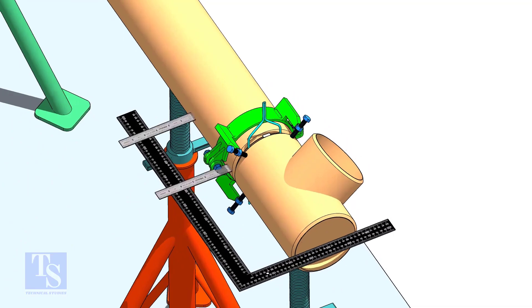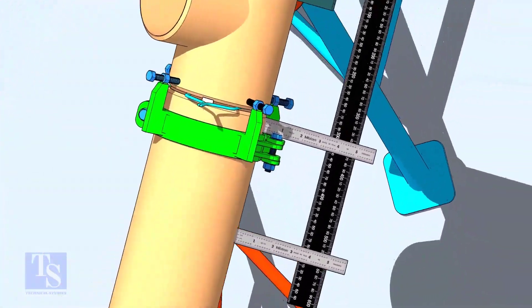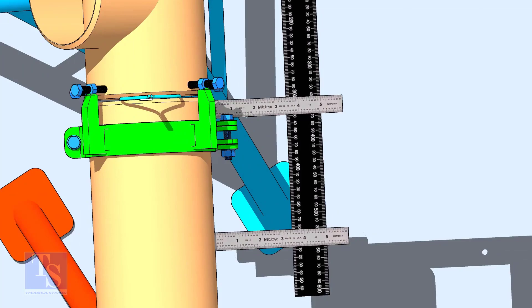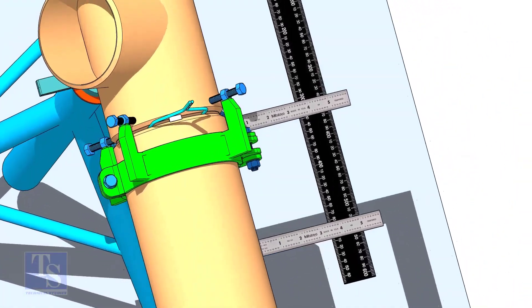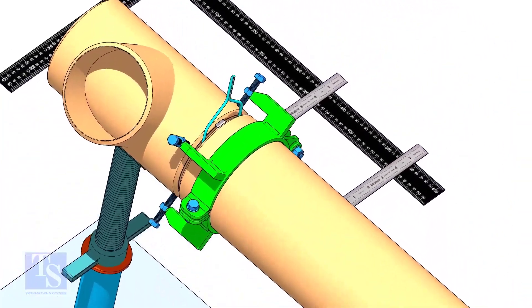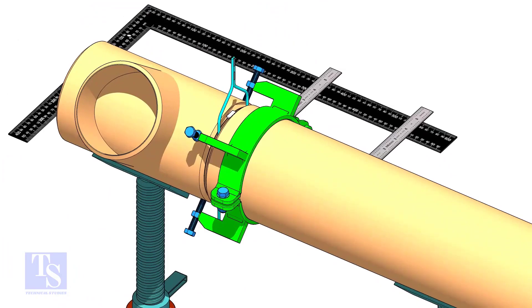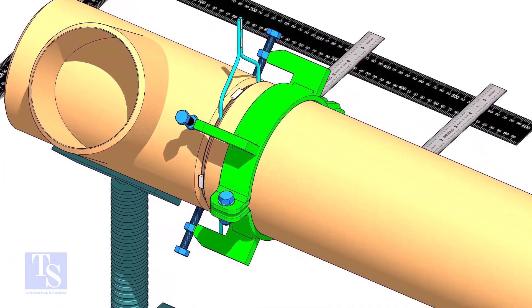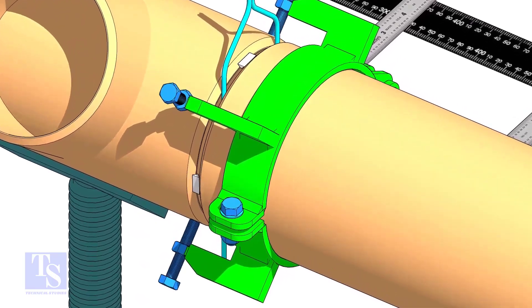Level the side of the T with the pipe, as shown. Now, tack weld on both sides of the joint.